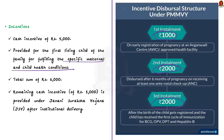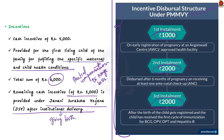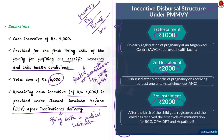The incentive is dispersed in three installments, as shown in the image here. The scheme is a partial compensation for wage loss, part of a plan to provide a total of ₹6,000 on average — the remaining ₹1,000 is provided under the Janani Suraksha Yojana (JSY) after institutional delivery, meaning birth in a medical institution under trained health personnel. In this discussion, we saw PMMVY's objectives, beneficiaries, and the incentive structure. Let us move to the next news article.